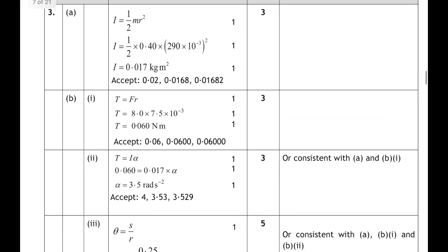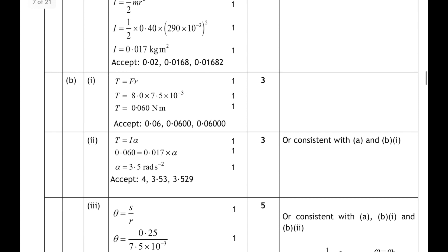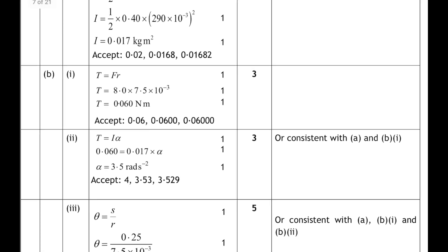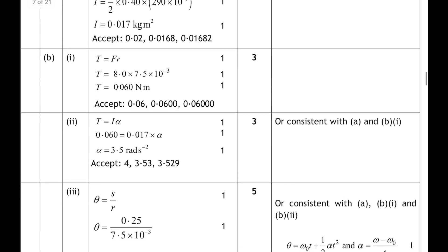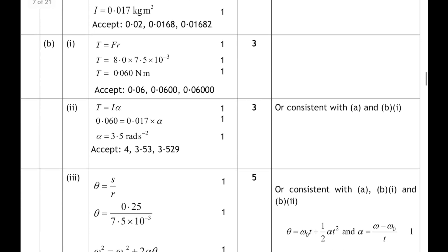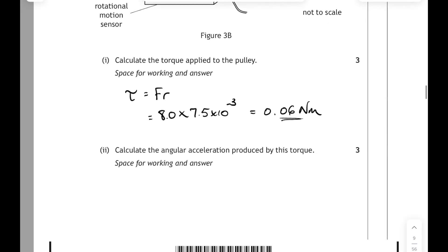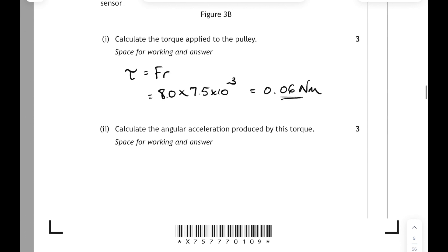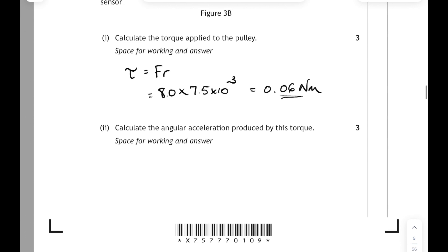Looking at the SQA marking instructions — although back in 2017 a capital T was used for torque, make sure you now use the Greek letter tau, which is on your relationship sheet. Then part 2: calculate the angular acceleration produced by this torque.